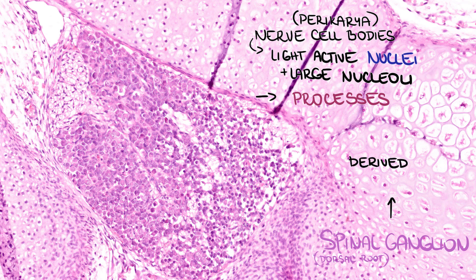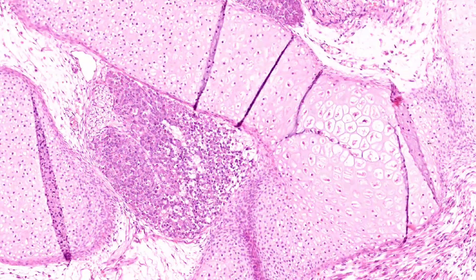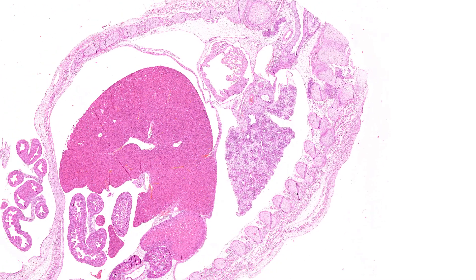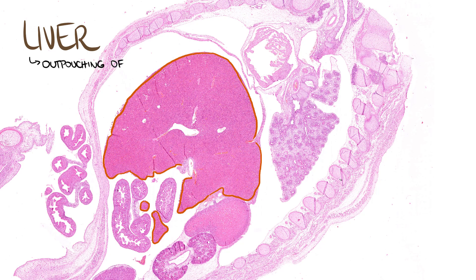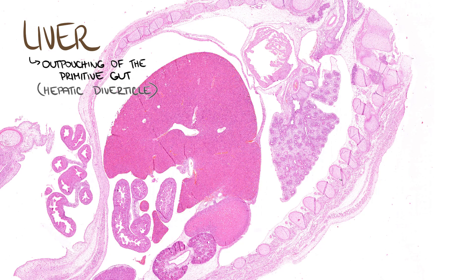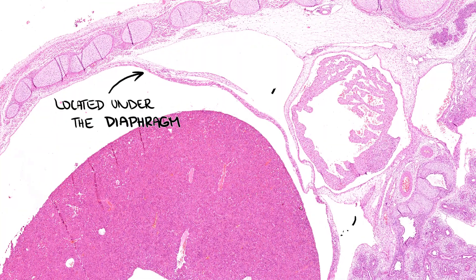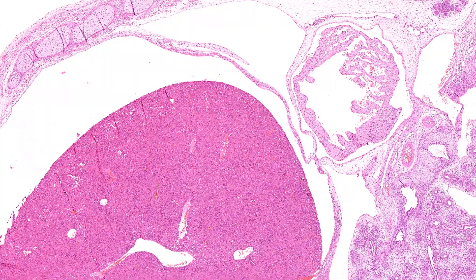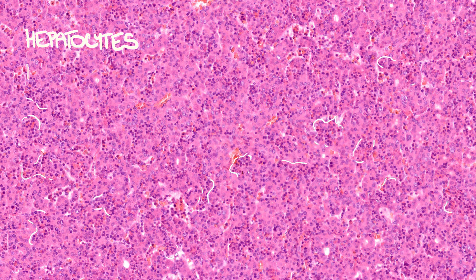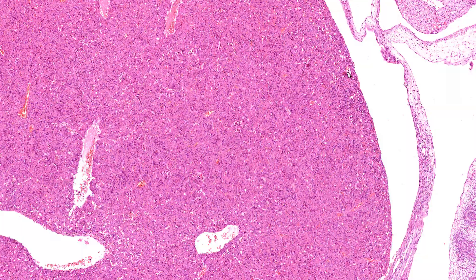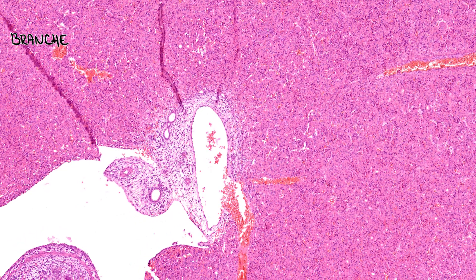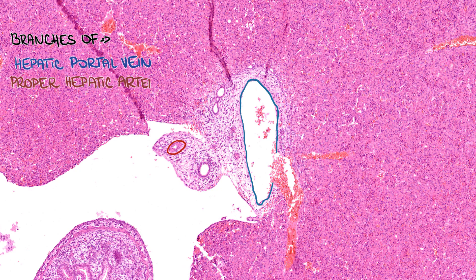Ganglia in general are derived from neural crest. Let us focus on the abdominal region of the fetal body. The largest organ, which takes up a big portion of the abdominal cavity, is the liver, which develops as an outpouching of the primitive gut called the hepatic diverticle. It is located under the diaphragm. Liver contains a huge number of developing hepatocytes, as well as islets of hematopoietic cells. Bone marrow will eventually take over the process of hematopoiesis, but it needs time to develop as bones are not yet fully developed. We can find the branches of hepatic portal vein, the proper hepatic artery, and the common hepatic duct in the hilum of the liver, called porta hepatis.